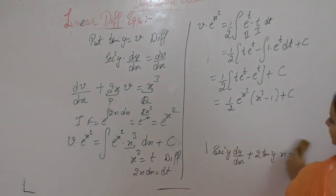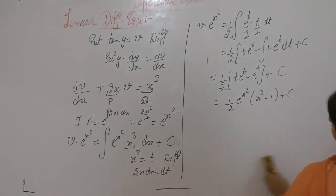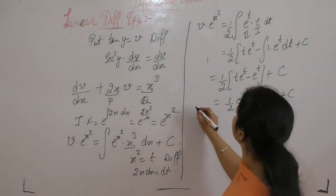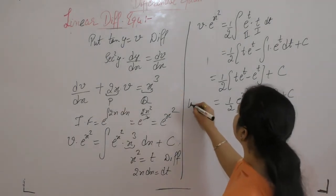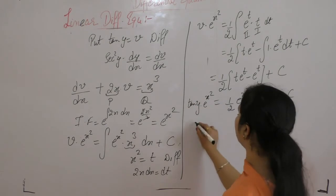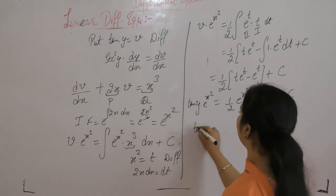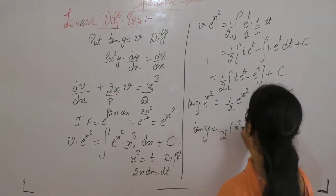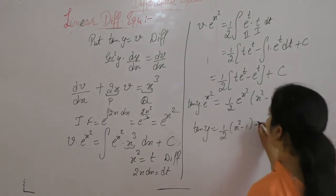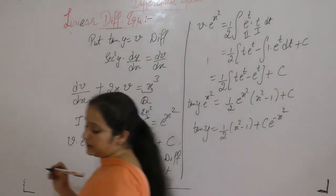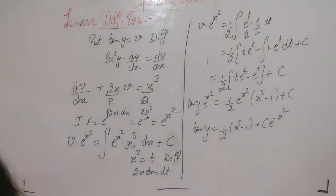Now put the value of v back: v = tan(y), so tan(y) · e^(x²) = (1/2) · e^(x²) · (x² − 1) + c. Or tan(y) = (1/2)(x² − 1) + c · e^(−x²).